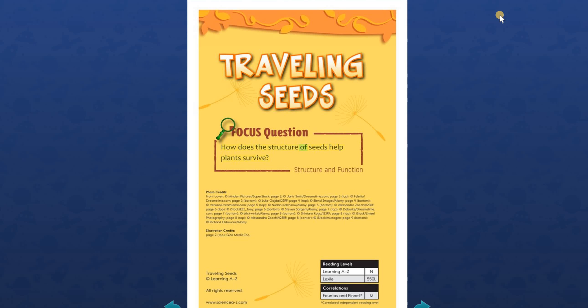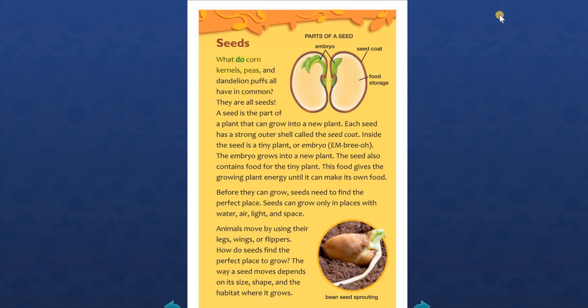Traveling seeds. Focus question: How does the structure of seeds help plants survive? Seeds. What do corn kernels, peas, and dandelion puffs all have in common? They are all seeds. A seed is the part of a plant that can grow into a new plant. Each seed has a strong outer shell called the seed coat. Inside the seed is a tiny plant or embryo. The embryo grows into a new plant. The seed also contains food for the tiny plant. This food gives the growing plant energy until it can make its own food.